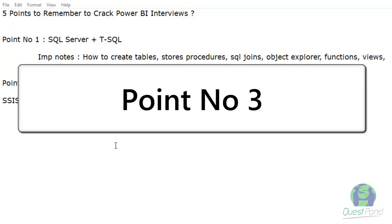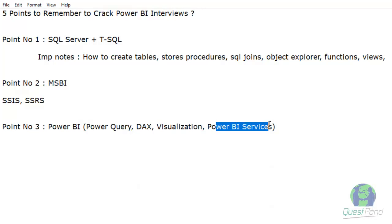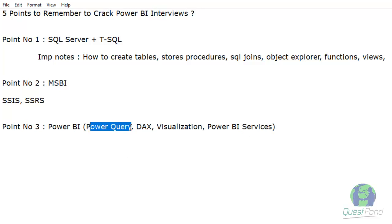Point number 3: knowing Power BI end to end — Power Query, DAX, Visualization, and Power BI Services. Just knowing visualization and creating presentations will not help you; you need to know Power BI end to end. Power BI is based on four pillars. You need proper knowledge of Power Query functions like append, merge, removing duplicates, parameters, and M functions categorized as text, number, date, string, table, and more.